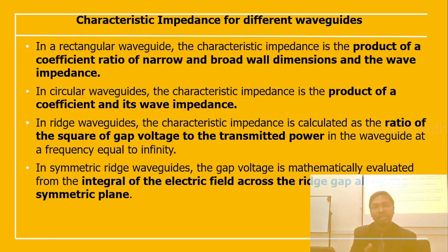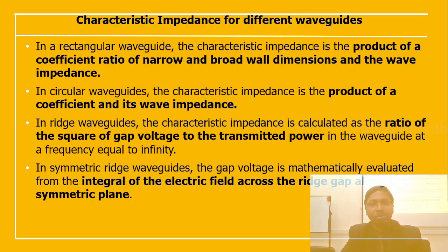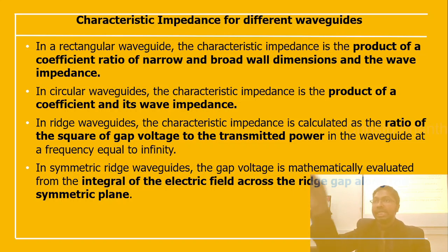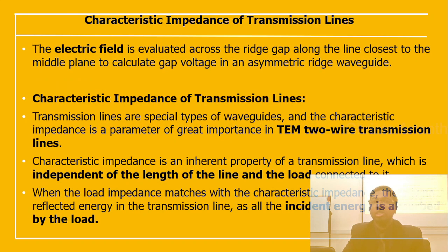For the ridge type of waveguide, the characteristic impedance is calculated as the ratio of the square of the gap voltage to the transmitted power — that is, gap voltage squared divided by transmitted power — at frequency equal to infinity. In the symmetric ridge waveguide, the gap voltage is evaluated from the integral of the electric field across the ridge gap along the symmetric line. In the asymmetric ridge waveguide, the electric field is evaluated along the line closest to the middle line to calculate the gap voltage.